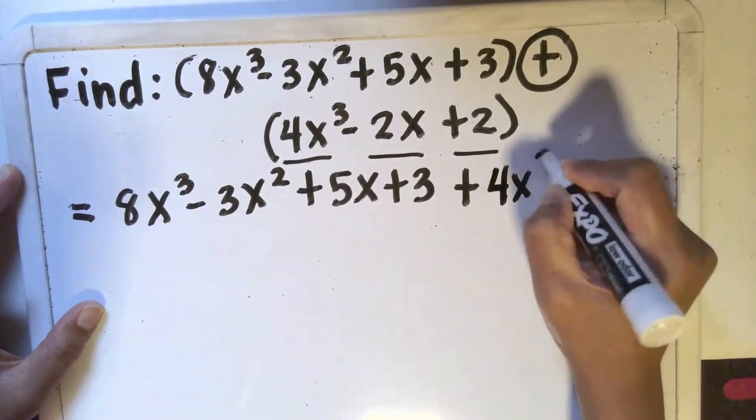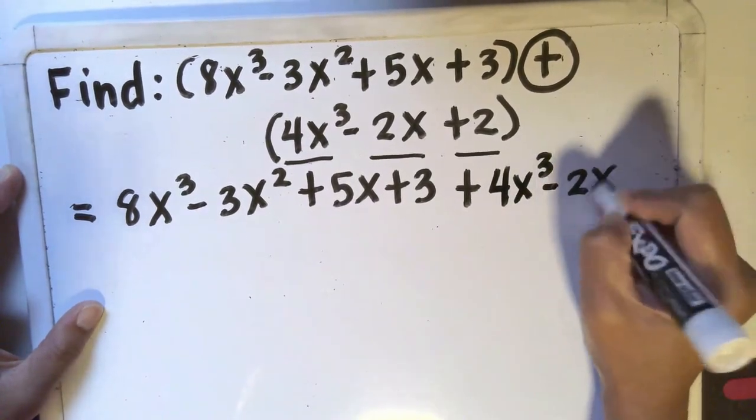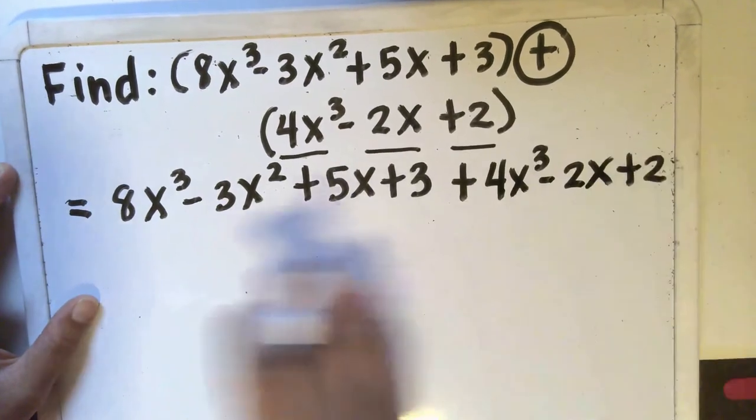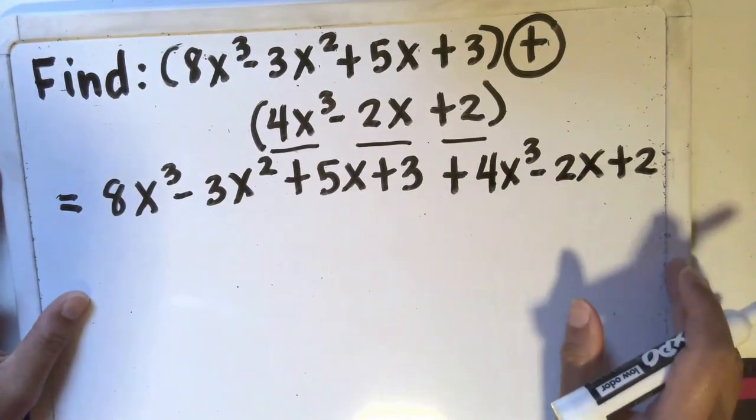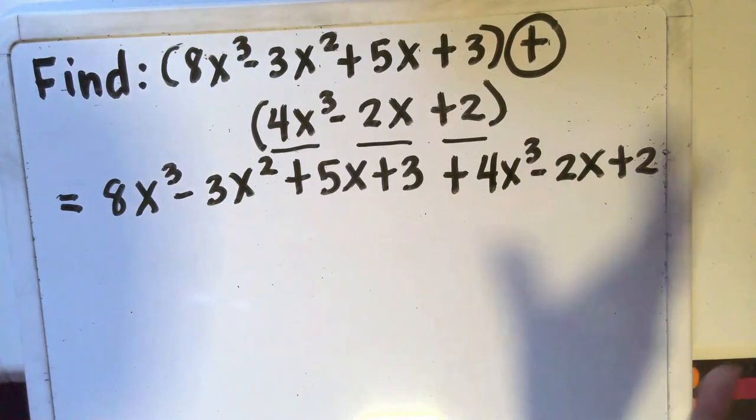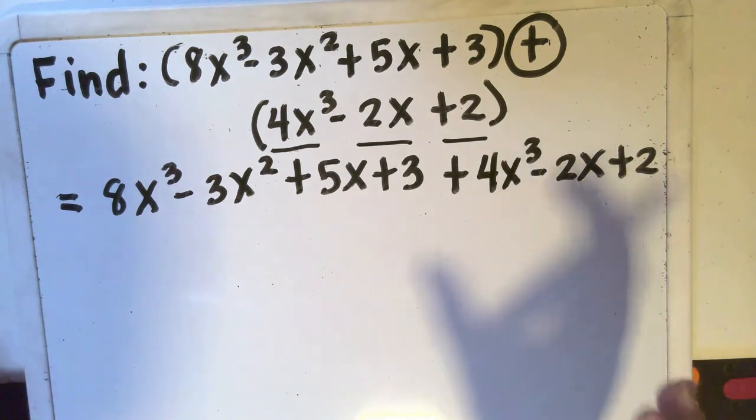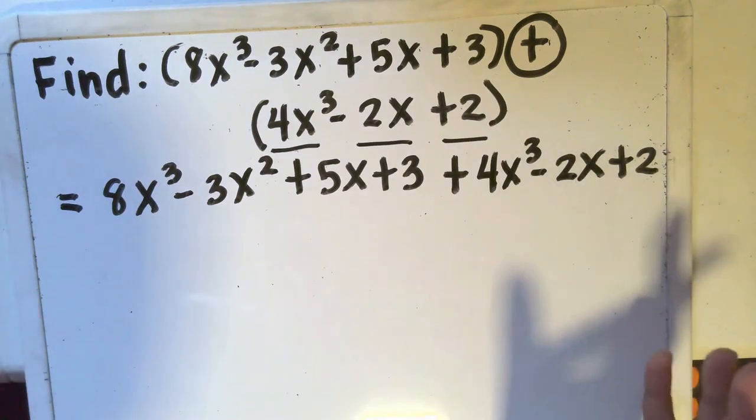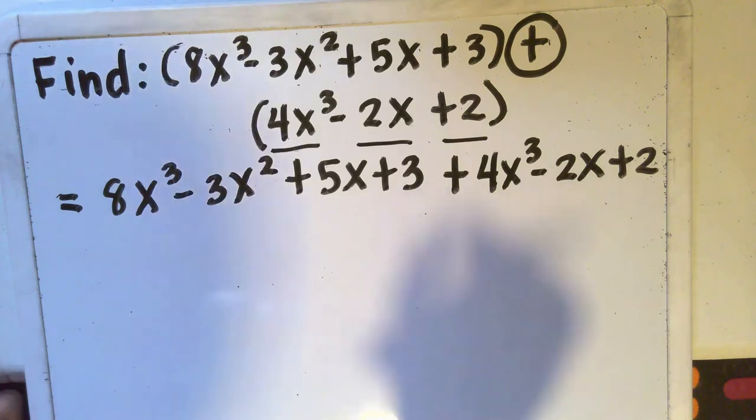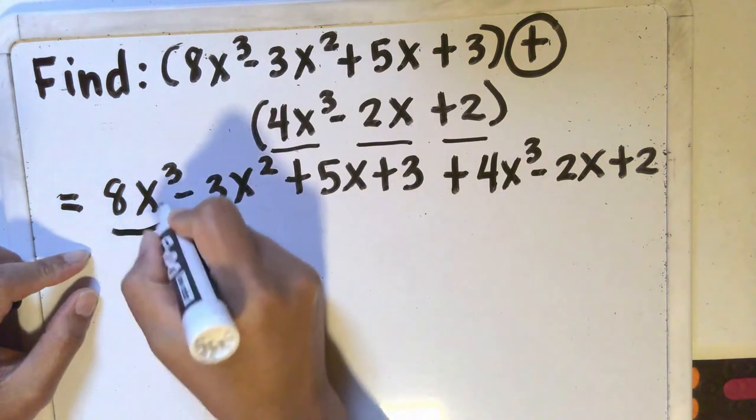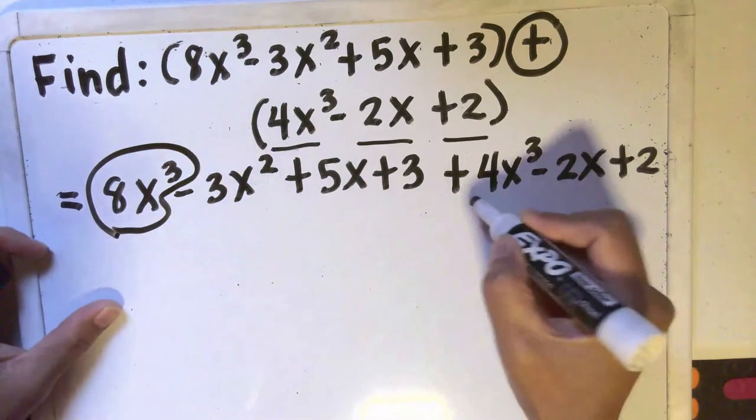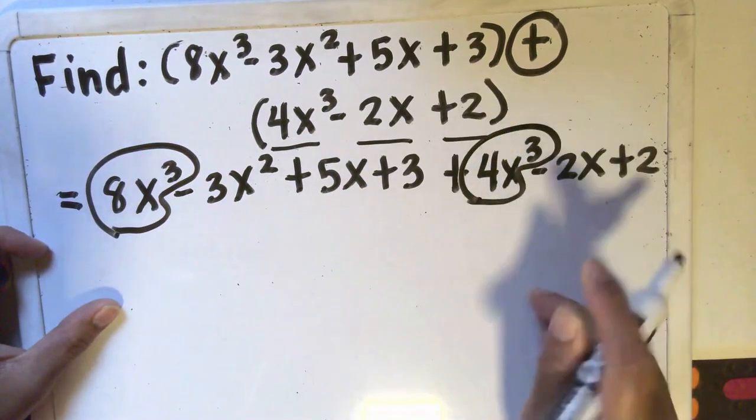From here all I need to do is to combine the like terms. Now when we say like terms these are the terms with the same variables. When we say same variables that means same letter and same exponent.